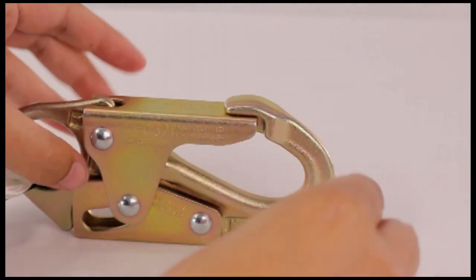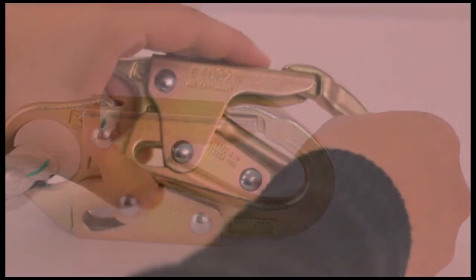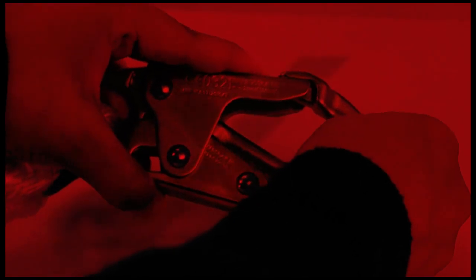Upon release, the locks should return to their original positions. If this does not occur, tag the snap hook and remove it from service. Record the inspection date and findings.